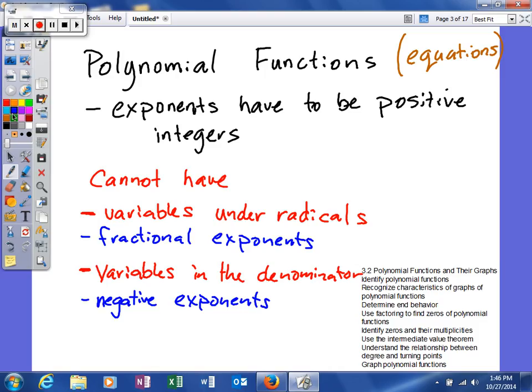The reason the blue ones exist is because variables under a radical, another way you could write that is if you use a fractional exponent. Variables in the denominator, again, another way you could write that is if you write a variable with a negative exponent.